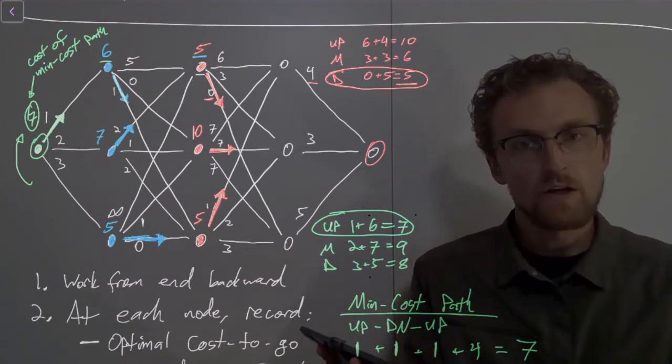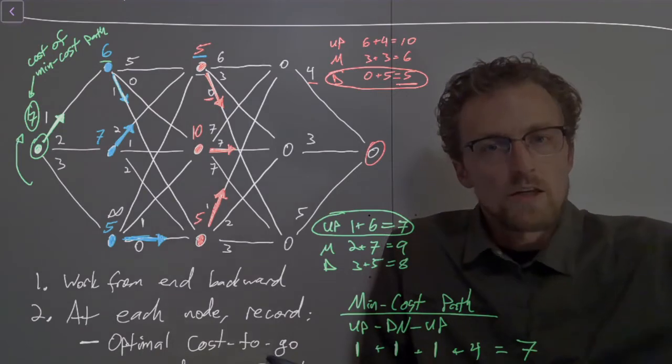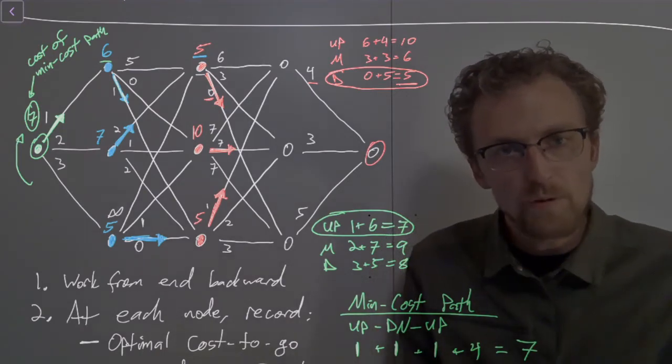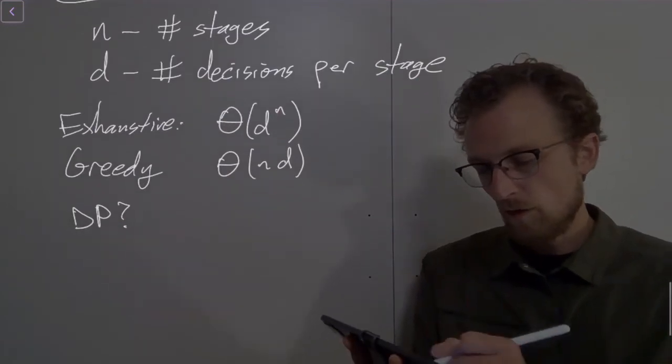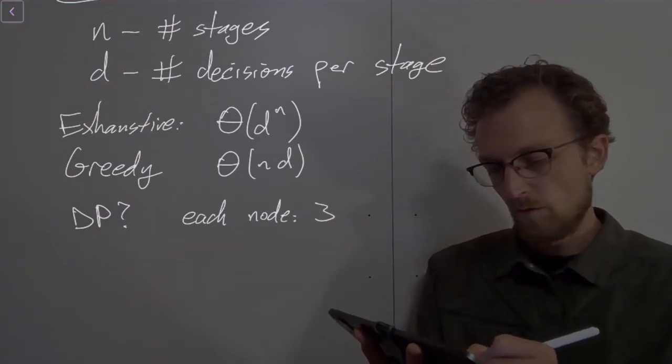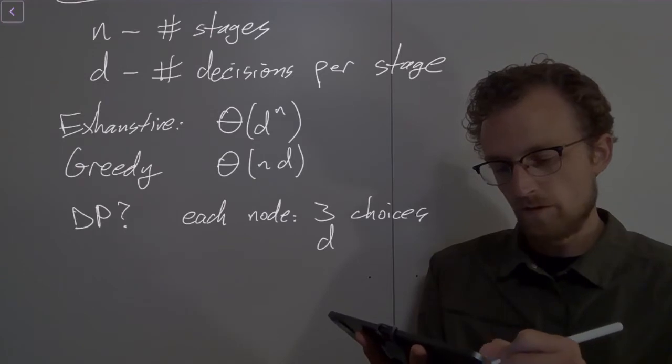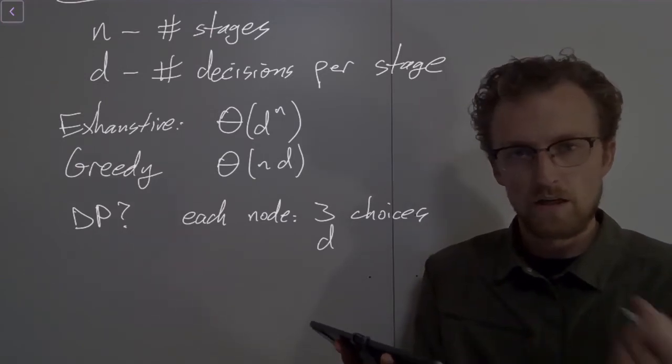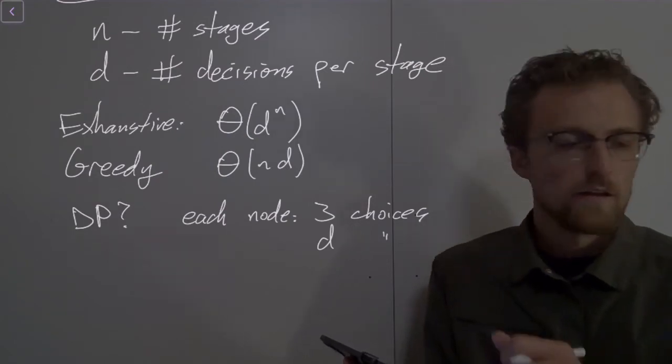In other words here, three choices, because each node gives us three decisions to make: up, middle, or down. So at each node, we had to make three choices, or d choices. That's the definition of d, the number of choices to make at each node.